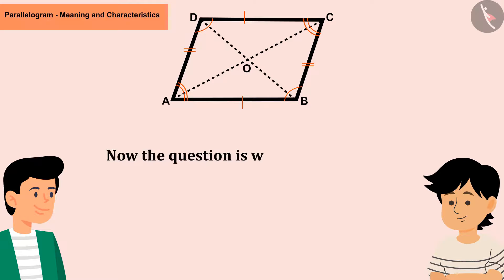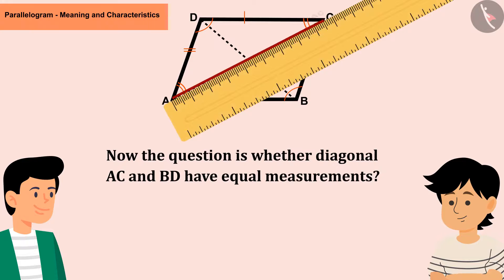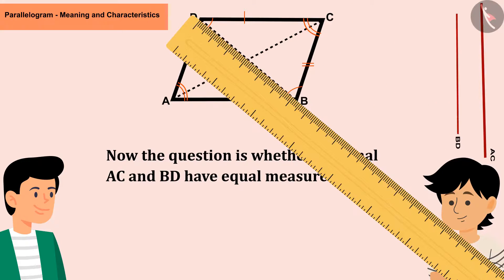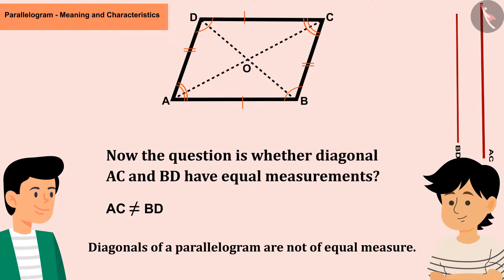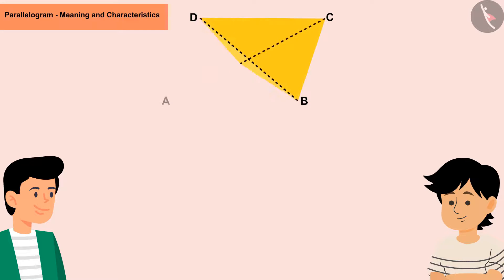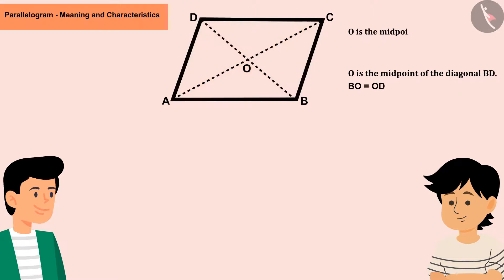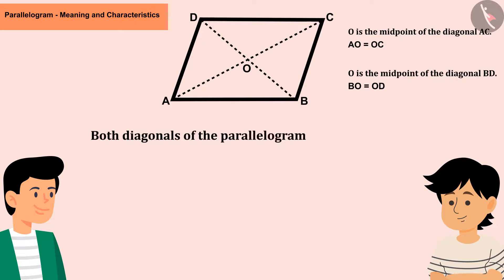The diagonals AC and BD are not of equal measure. Folding the parallelogram so that vertex A covers vertex C gives the midpoint of AC; folding so vertex B covers vertex D gives the midpoint of BD. Since both midpoints are the same point O, both diagonals of the parallelogram bisect each other.